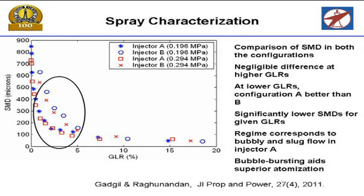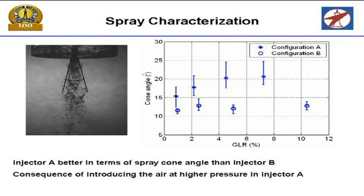Looking at mean drop sizes, you find that injector A (inside-out configuration) gives lower drop sizes, while injector B (mixing near the orifice) gives larger drops. Eventually at high GLR they come close together. But in the low-to-mid GLR region, there is a large difference between the two types of configurations, and this is where you find the discrepancies in the literature at that percentage level. So the internal flow and the way you mix seems to be important. For cone angle, because of the explosion phenomena you get a larger angle in the bubble regime, while the annular type gives a narrower, somewhat steady cone.